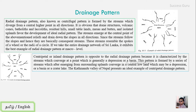Centripetal, or inland drainage pattern, is the opposite of the radial pattern. It is characterized by streams which converge at a central point, generally a depression or a basin. This pattern is formed by a series of streams which, after emerging from surrounding plains, converge in a central lowland which may be a depression, basin, or crater lake. The Kathmandu Valley of Nepal presents an ideal example of a centripetal drainage pattern.